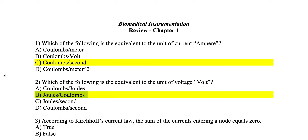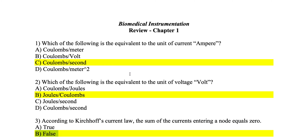For question number 3, according to Kirchhoff's current law, the sum of the current entering a node equals zero — is this true or false? It is actually false, because it should be the net current entering a node equals zero, not the sum of currents entering a node equals zero. So that is a false statement.